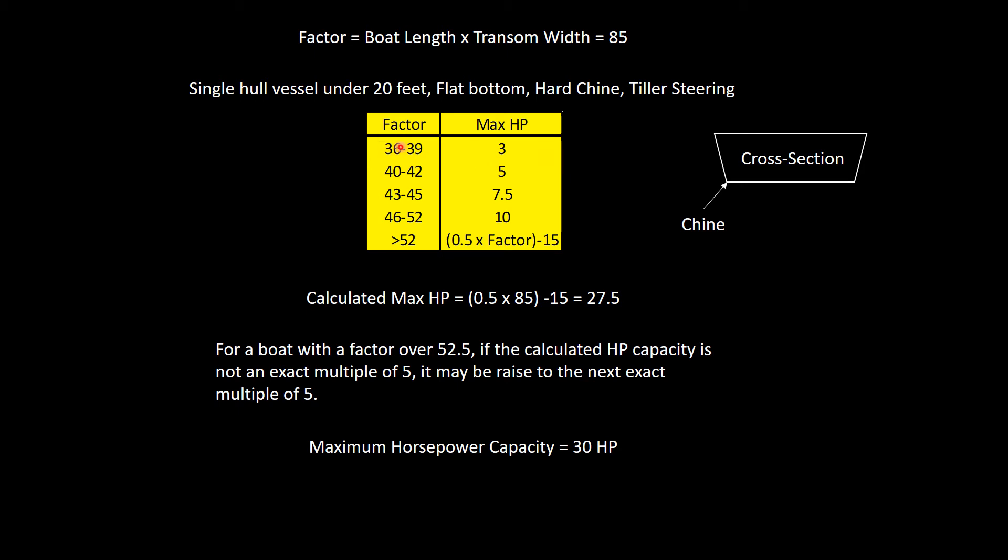If your factor is between 36 and 39, you can only put a 3 horsepower outboard on. Our factor is 85, so we're greater than 52. And if you're greater than 52, you use this little formula, which says you take half your factor, 50% of your factor, and subtract 15.